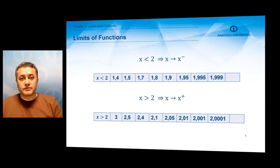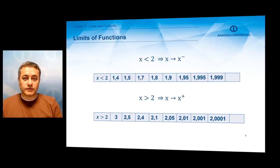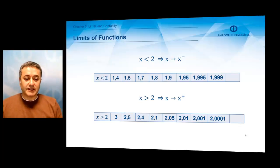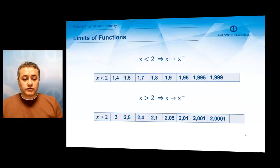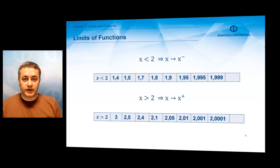Since we are approaching the point 2 with smaller values than 2, this approach is called approaching from the left. We can also approach the point 2 from its right, meaning that we give greater values to the variable x like 3, 2.5, 2.4, 2.01, 2.001, and we can continue this process forever and approach the point 2.